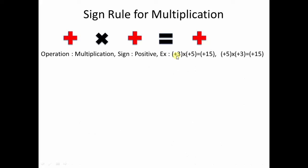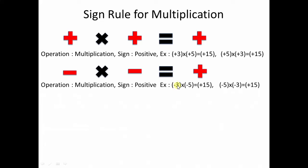Let's check out an example: a positive number times a positive number gives a positive result. Next, a negative number multiplied by a negative number is also going to give you a positive number. So you see, minus 3 times minus 5 will be plus 15. When the signs are the same, the result is positive.